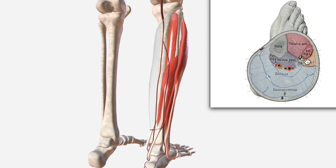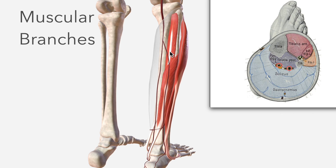Highlighted in orange is the lateral compartment, this being fibularis longus, which is here in our model. These two muscles — fibularis longus as well as fibularis brevis — are both supplied by the muscular branches of the fibular artery, which penetrate and supply muscles in the posterior and lateral compartments of the leg.